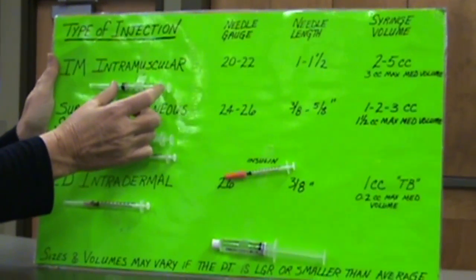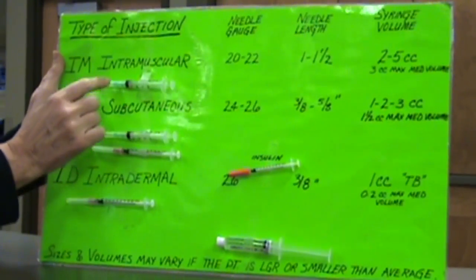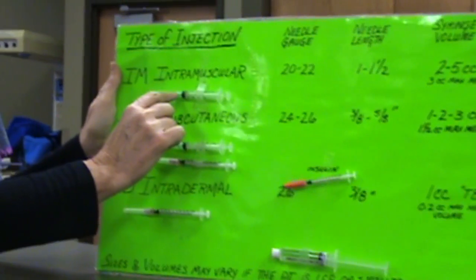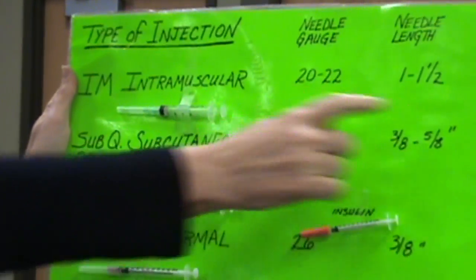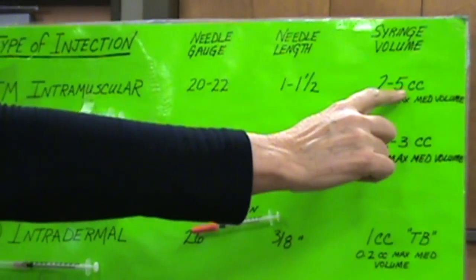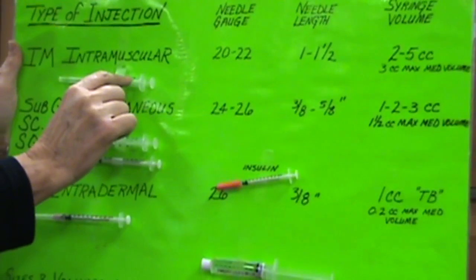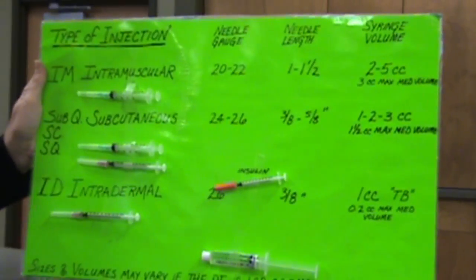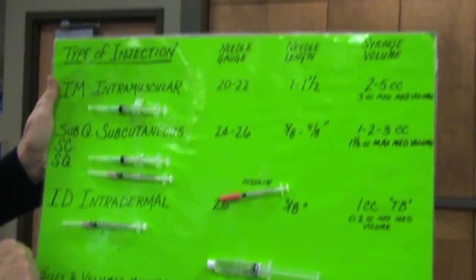You have the larger syringe for it. So you have your needle here, and then the hub that comes next, and then your syringe is usually a two to five cc volume. This one happens to be three cc's, or milliliters is another word for it.